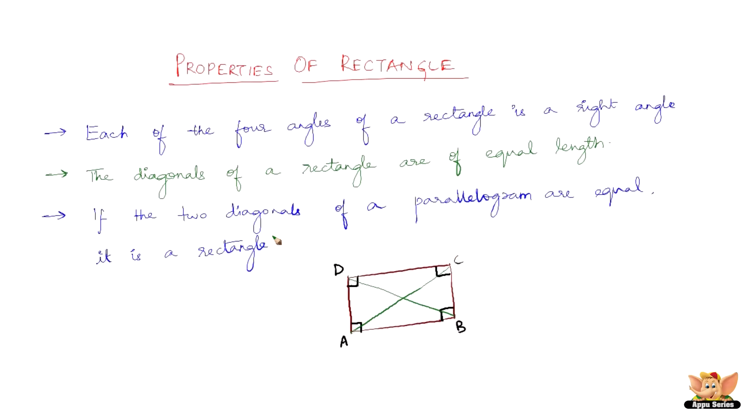The third property is the converse of the second property, which states that if the two diagonals of a parallelogram are equal, then it is a rectangle. Usually, the most common way of representing a parallelogram is like this. But here, the two diagonals are not equal.